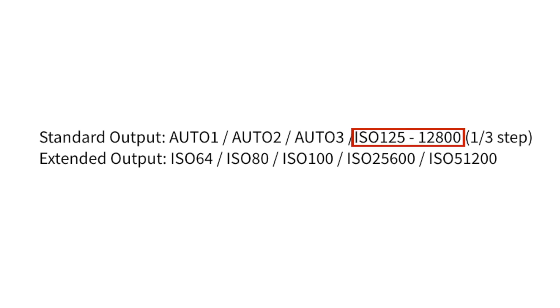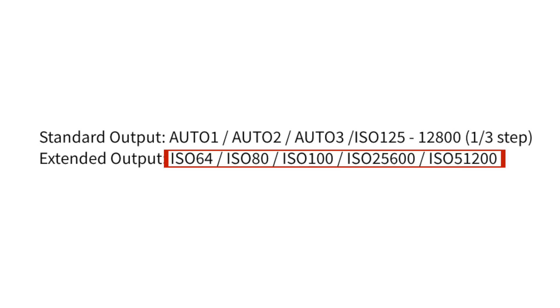Looking at my Fujifilm X-T5, it has a native or normal ISO range of 125 to 12,800, but an extended range of 64 to 51,200.